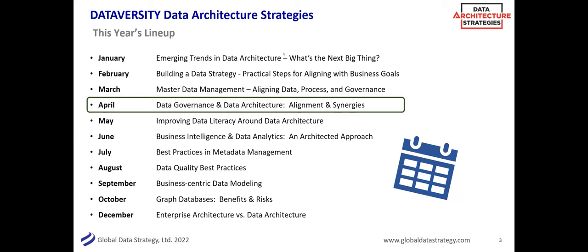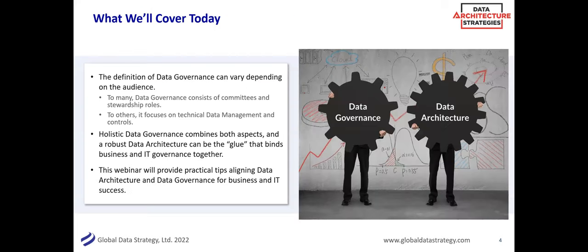Today's topic is data governance and data architecture — alignment and synergies — and what that means. We'll cover the difference between governance and architecture: where they're the same, where they differ, and how they fit together. Cut to the chase: they are separate areas that relate together. But there's more nuance, and we'll get into the details of those differences, what the overlap is, and how you can make the best of both worlds in your data-driven initiatives.